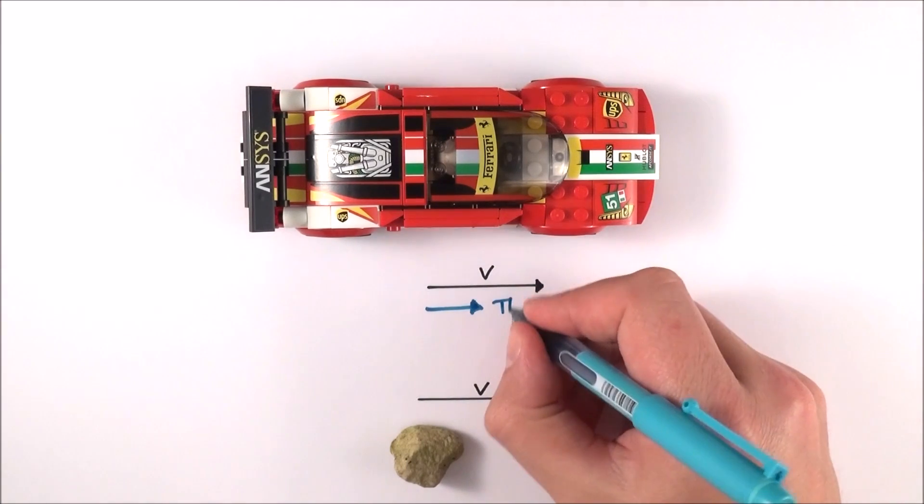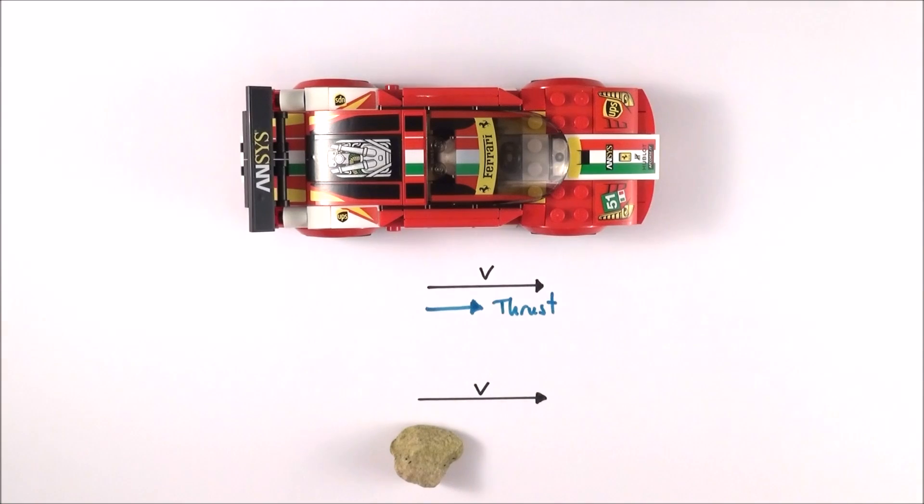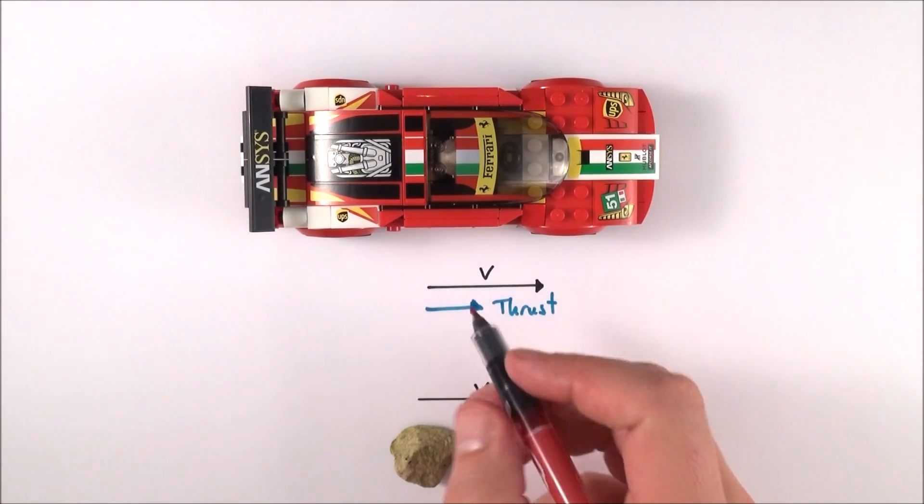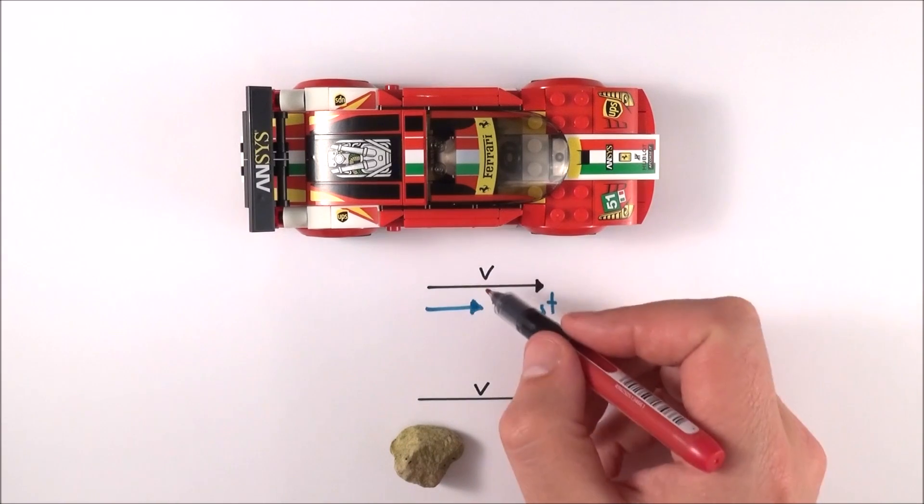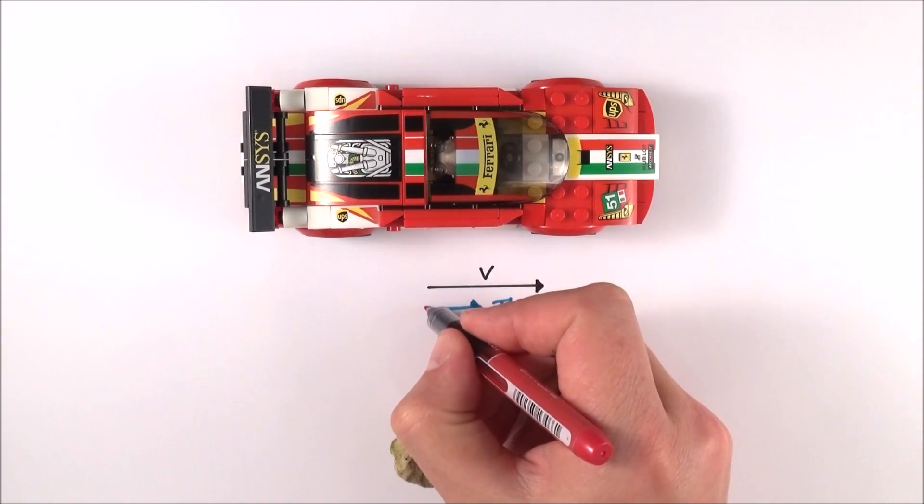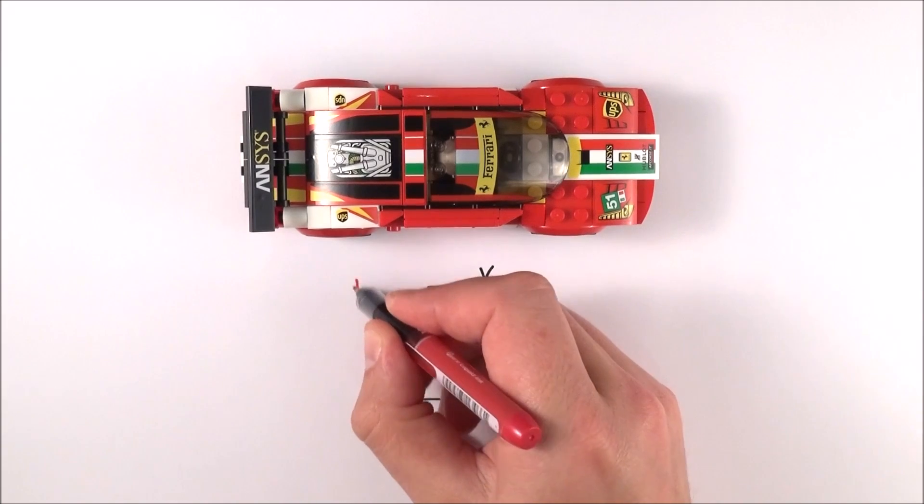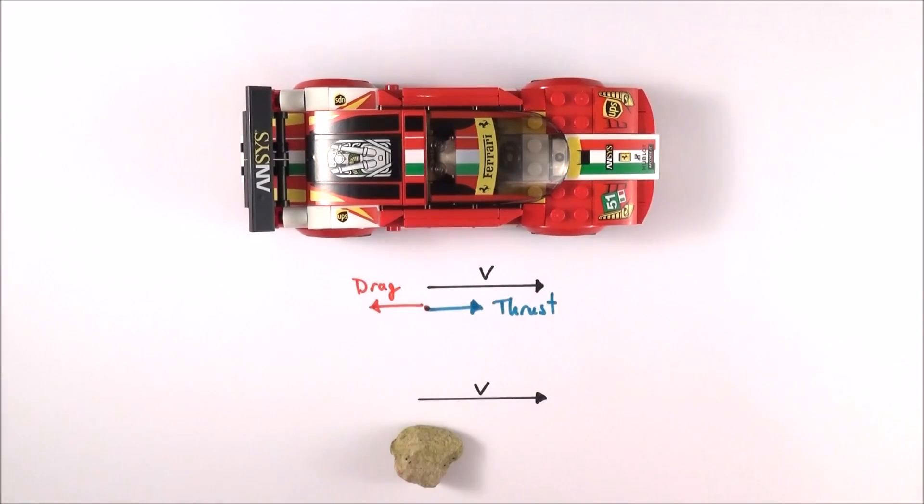And this might be perhaps the thrust from an engine. As soon as that thrust dies away, the car tends to slow down. But the reason that this is moving with a certain velocity forward, and let's say this is the constant velocity, is because this thrust force is balanced by the drag force which is acting in the opposite direction.